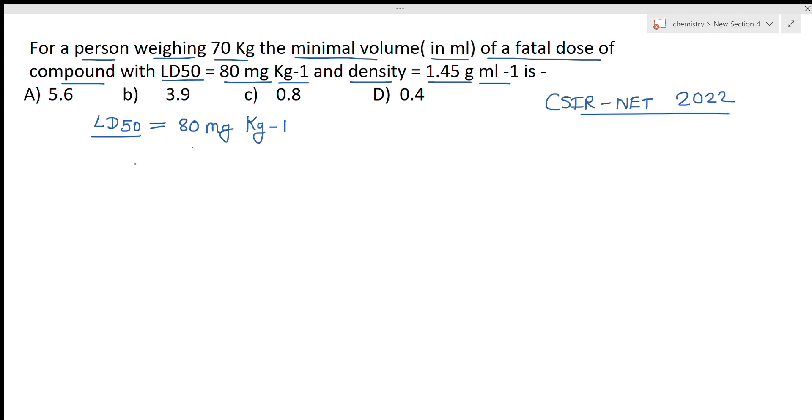Now we have given that the person's weight is 70 kg. So one kilogram needs the dose of 80 milligram. So 70 kilogram will need a dose of 80 into 70, which will be equal to 5600 milligrams.